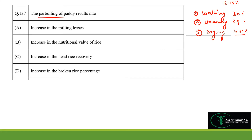Parboiling is done to increase the yield of rice milling. Also, because of steaming, the nutritional value of rice increases — water-soluble vitamins present in the husk move with water into the interior part of the rice, improving nutritional value.